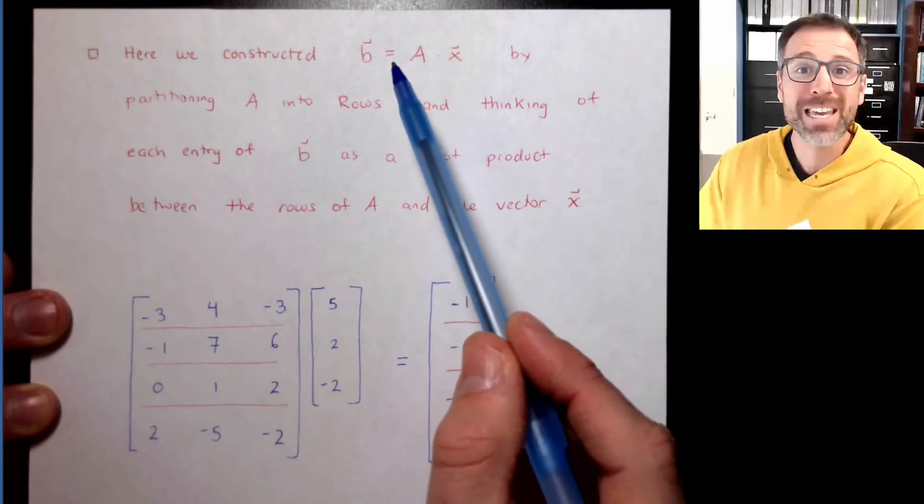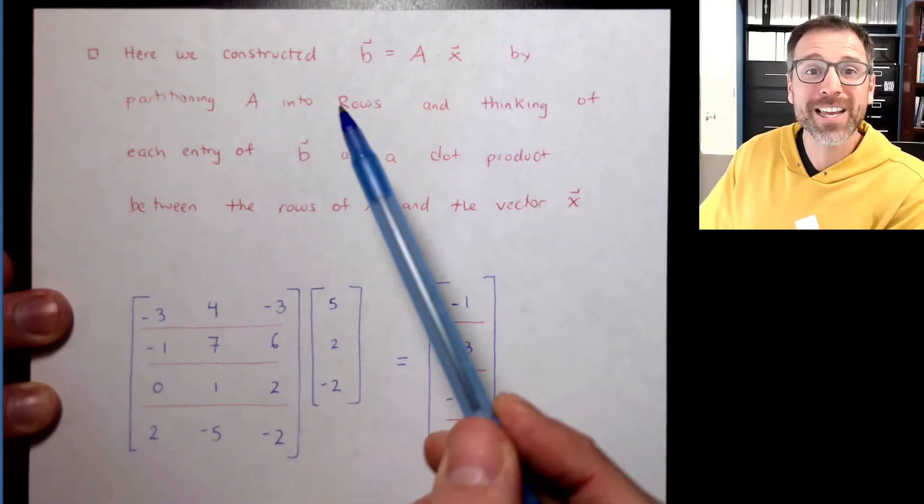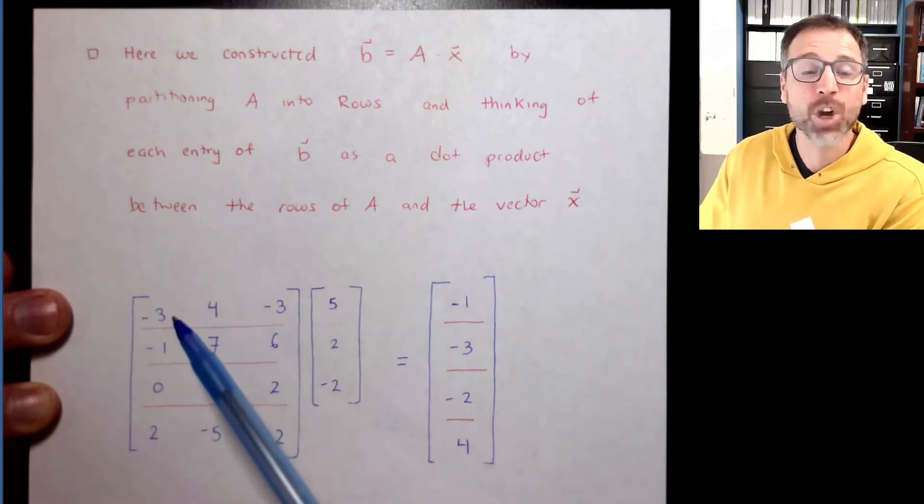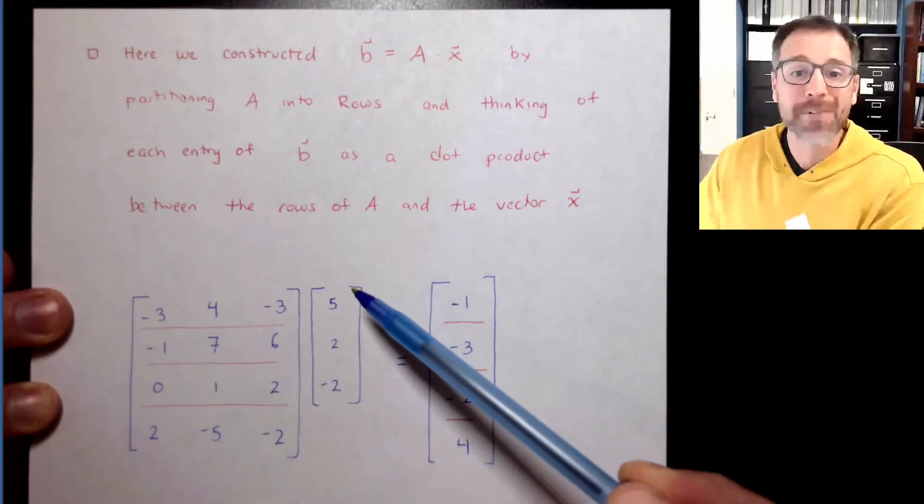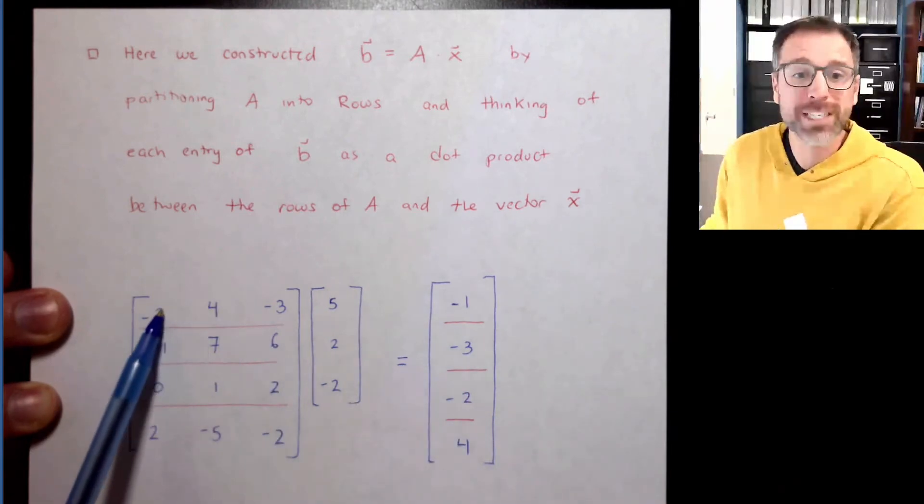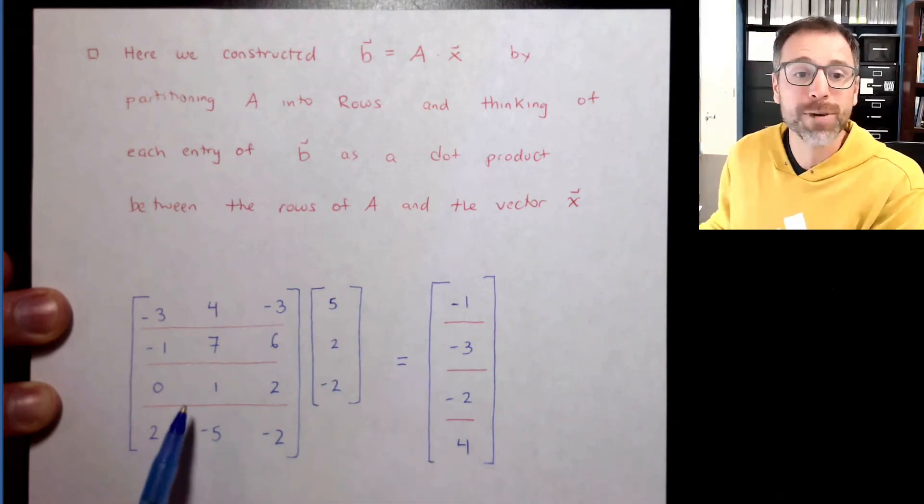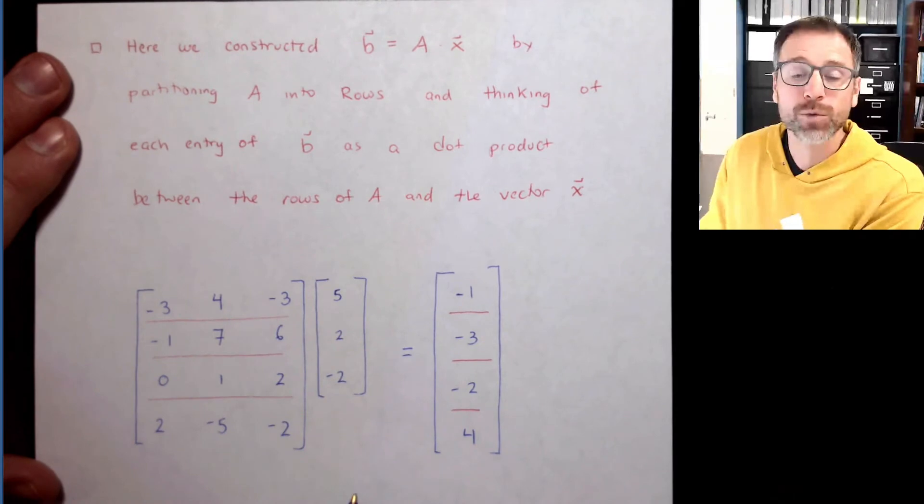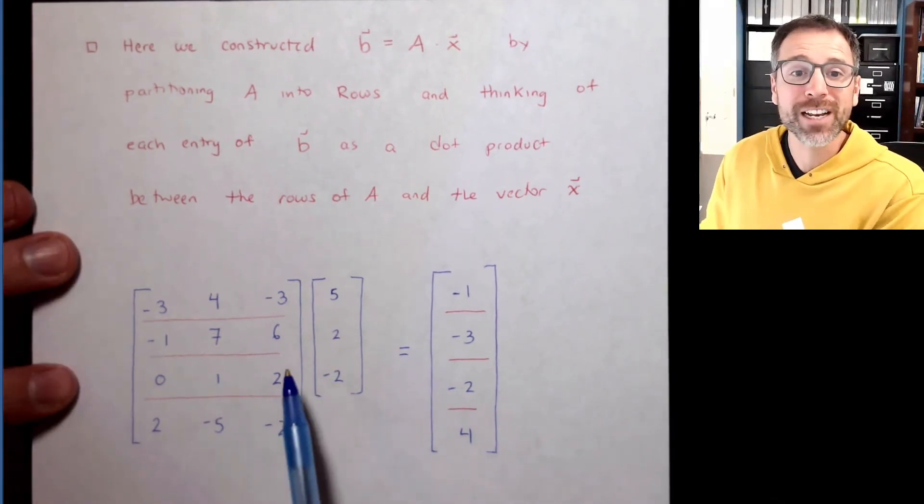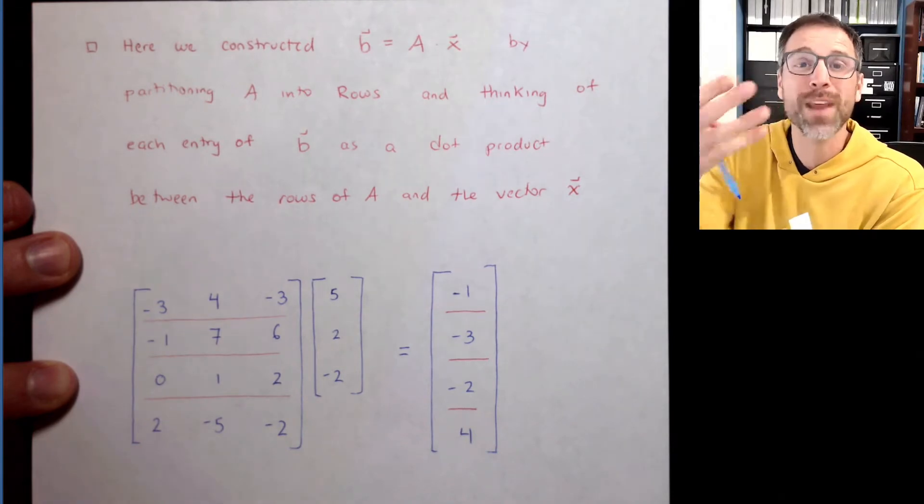And we get to a place where we've done our calculations that we desired. We constructed B equals AX by partitioning B into rows, and then thinking about each entry of B as the corresponding dot product between the row that we desire and the vector X. So here we said that row 1 dotted with X was negative 1, row 2 dotted with X was negative 3, row 3 dotted with X was negative 2, and row 4 dotted with X was 4.